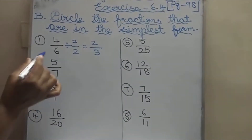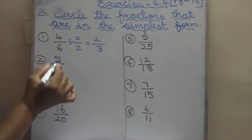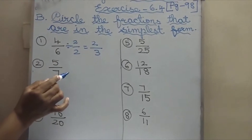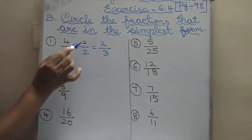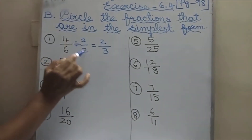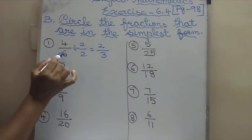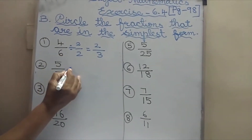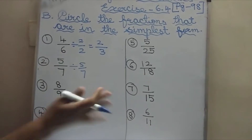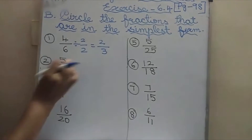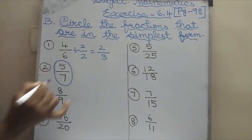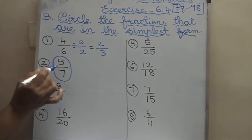Here, 5 by 7 — can you divide, children? No. Because 5 goes in 5 tables and 7 goes in 7 tables. The numerator and the denominator should go in the same tables. But here you can't divide in the same table. So this is the simplest form — you have to circle this one.